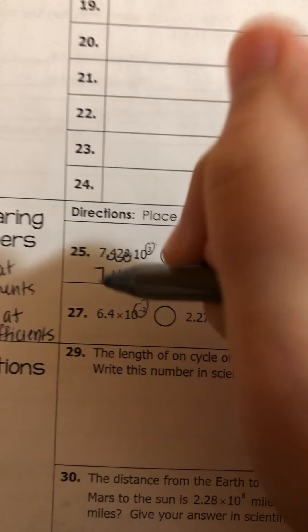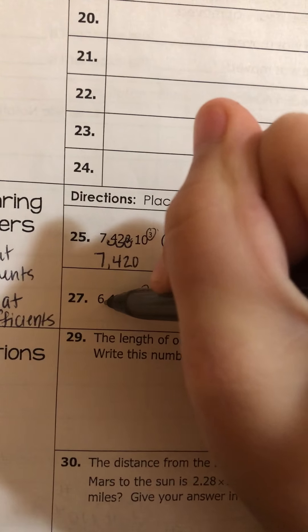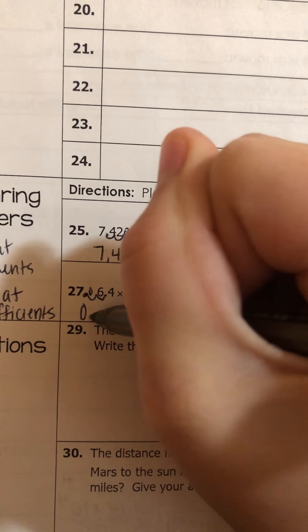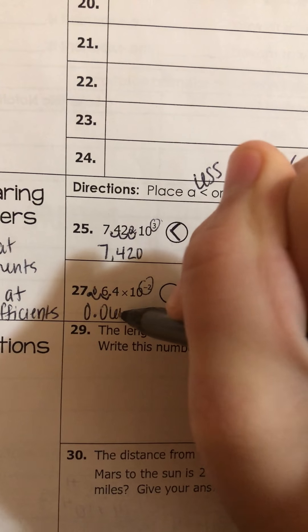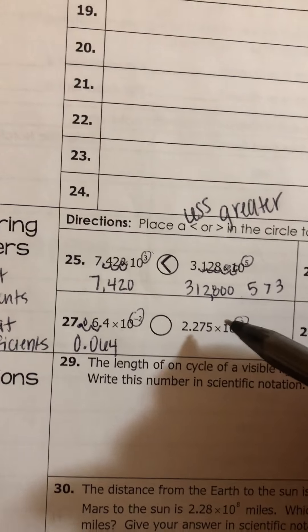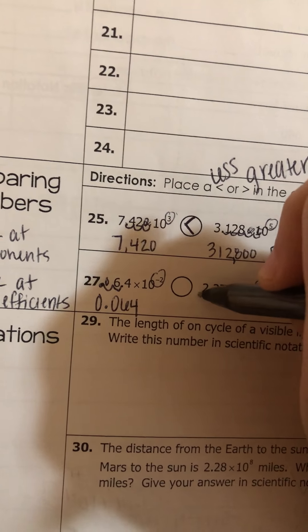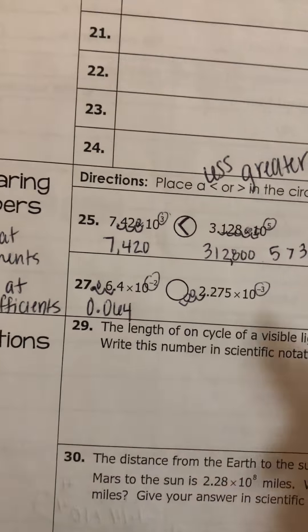Okay. So 6.4 times 10 negative 2 would be two swoops this way. And then this one would be three swoops to the left. One, two, three, and fill in with zeros.